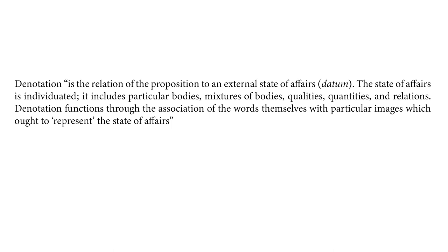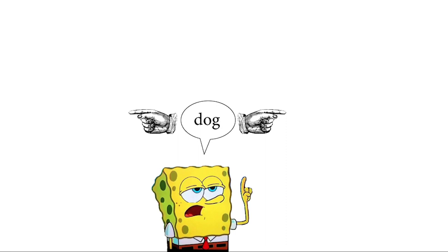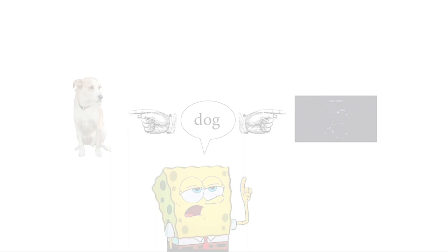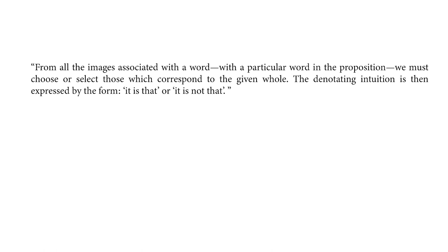So, to take a simple example, if I say the word dog, I could be designating either one of two things: the physical dog that is standing in front of me, or the celestial constellation that is above me, which is also called the dog. Here's how designation works in practice. From all the images associated with a word, with a particular word in the proposition, we must choose or select those which correspond to the given whole.